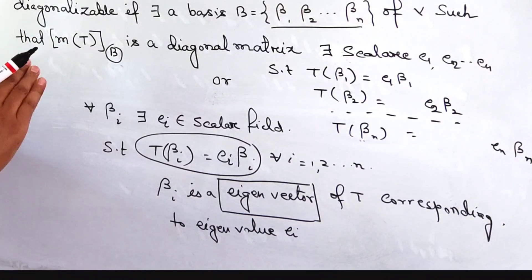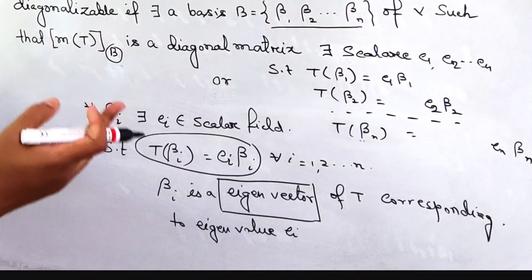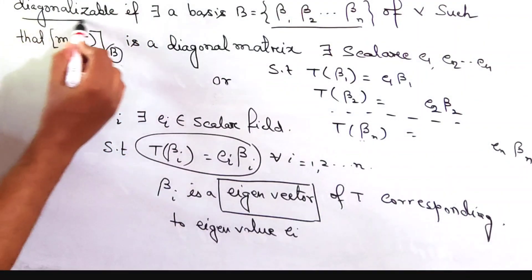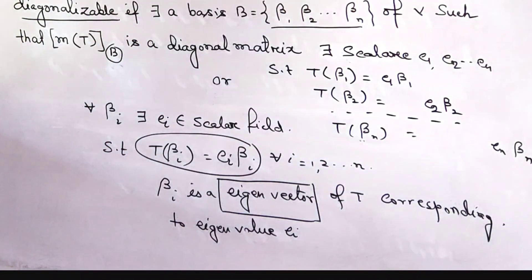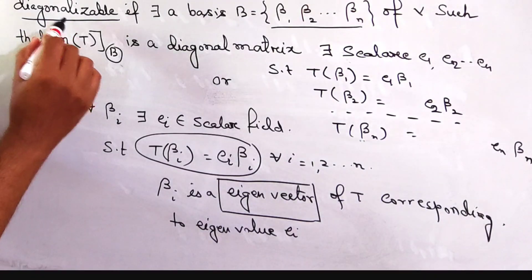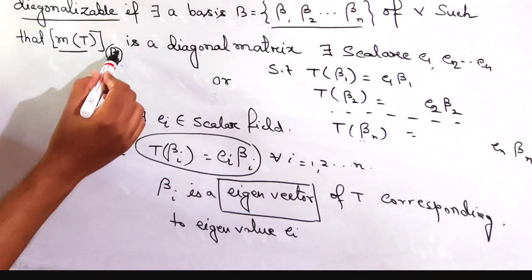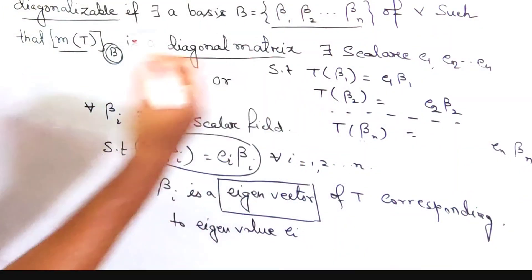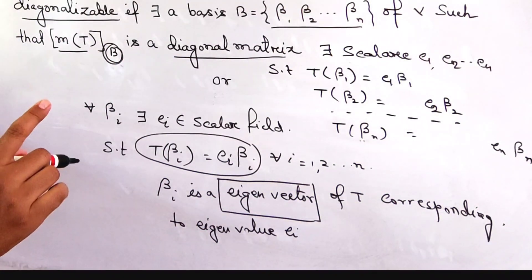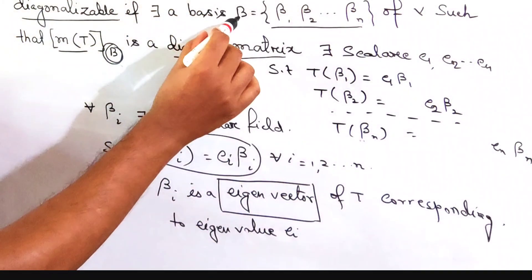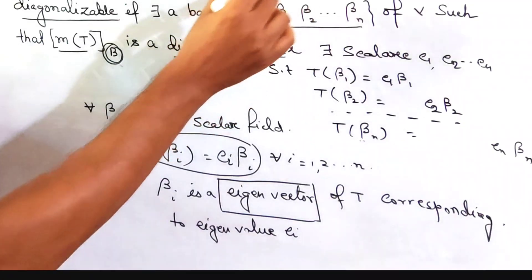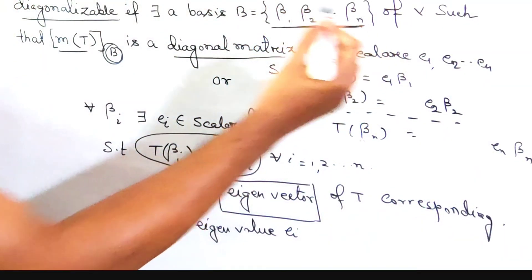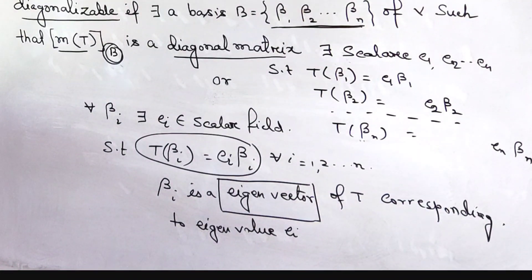So we say that this basis consists of all the eigenvectors of T. So we prove: if T is diagonalizable — meaning the matrix of T with respect to basis B is a diagonal matrix — then the basis of V consists of all the eigenvectors of T.